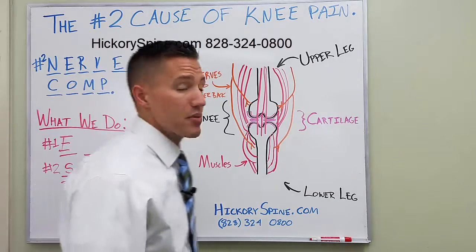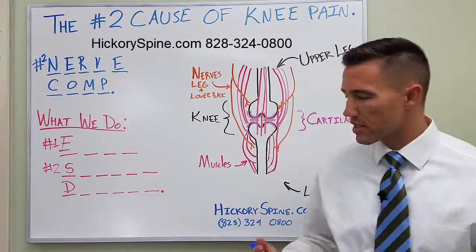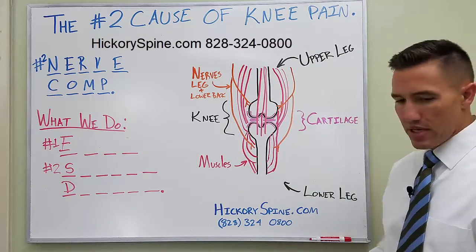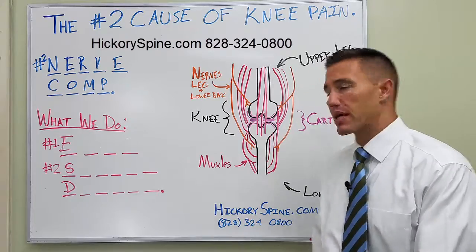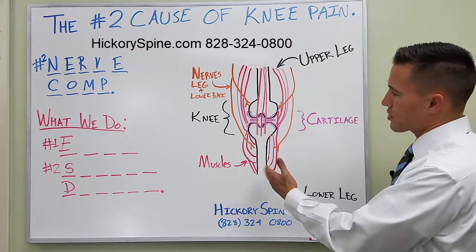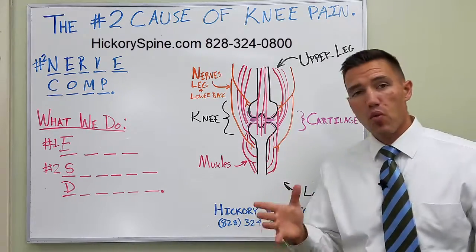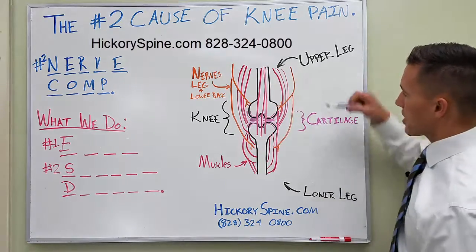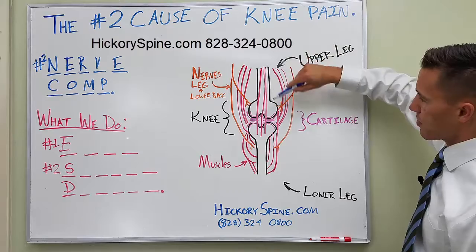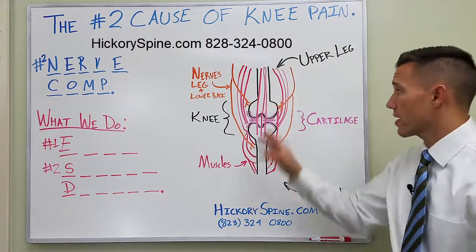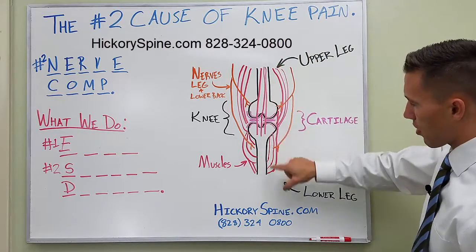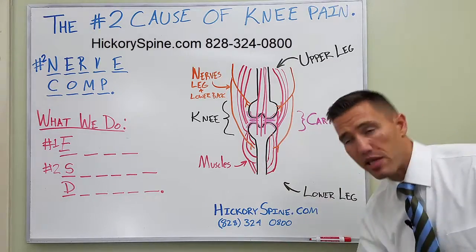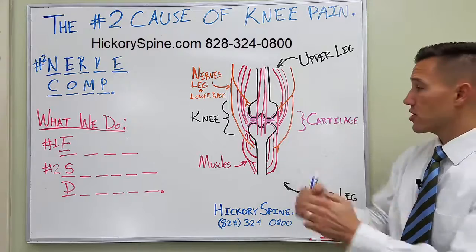Now, nerve compression — you might be thinking, well, how can a compressed nerve create a problem with my knee? Well, the issue is that the nerves that go down into your legs — and if we use this picture, it's supposed to represent one of your legs. This bone, this black, represents the upper leg, so this would be your femur, your thigh. This lower part, this bone that you see like half of a bone, represents the lower leg, which is the tibia. Now when they join together, that's your knee joint.